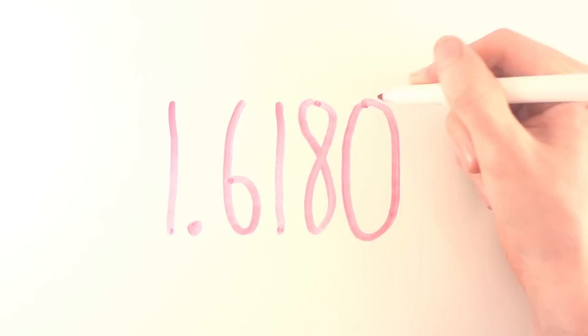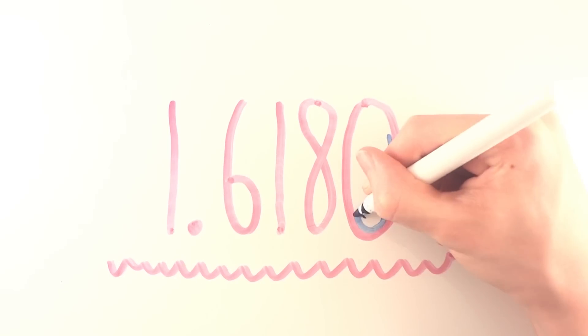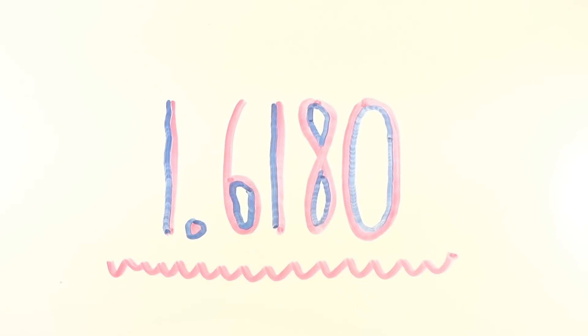1.618. It might not mean much to you, but this number, which is commonly referred to as the golden ratio, happens to define beauty quite well. The golden ratio is simply a fixed ratio.